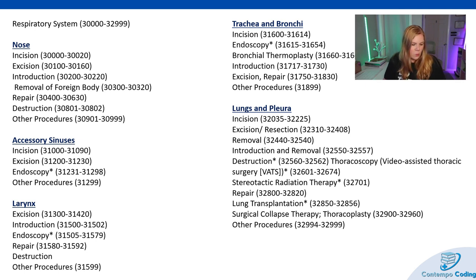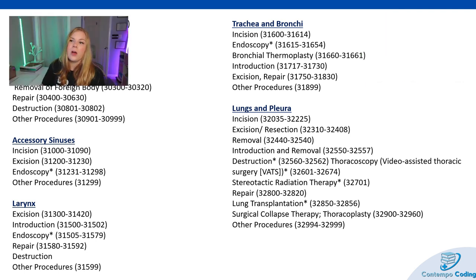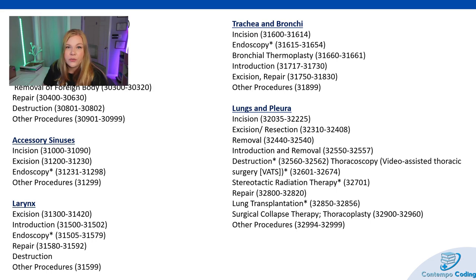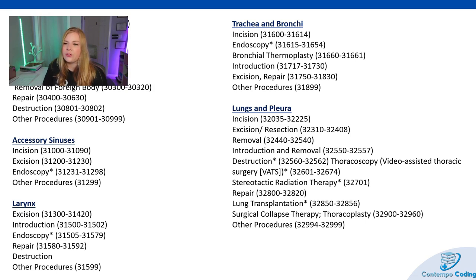Then we have our trachea and bronchi: incision, endoscopy, bronchial thermoplasty, introduction, excisions and repairs, and then other procedures of the trachea and bronchi. Now we're into the lungs and pleura. We have our incision, excisions or resections, removals — those could even be things like lobectomies — introduction and removal, destruction, so video-assisted thoracic surgery or VATS, and we're actually going to go over a VATS case today. And then stereotactic radiation therapy for the lungs, repair, lung transplants, as well as surgical collapse therapy, thoracoplasty, and other procedures.